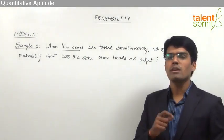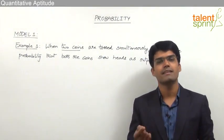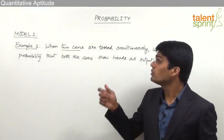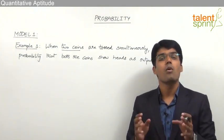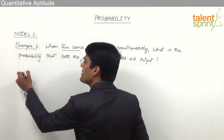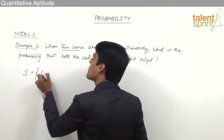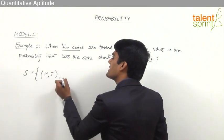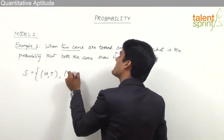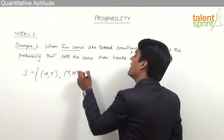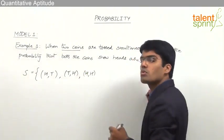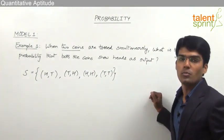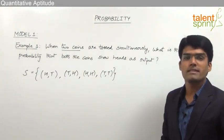When one coin is tossed there are two possible outcomes — either a head or a tail. So the sample space for tossing a single coin is {head, tail}. But here two coins are tossed simultaneously. The sample space includes: first coin head and second coin tail; first coin tail and second coin head; both heads; and both tails. These are the four possible outcomes when two coins are tossed simultaneously.